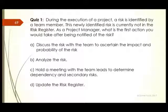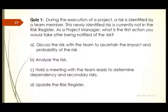During the execution of a project, a risk is identified by a team member. This newly identified risk is currently not in the risk register. As a project manager, what is the first action you would take after being notified of the risk? You have four options: A) Discuss the risk with the team to ascertain the impact and probability; B) Analyze the risk; C) Hold a meeting with the team to determine dependency and secondary risks; D) Update the risk register.